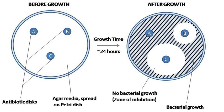Inoculation is made with a broth culture diluted to match a 0.5 McFarland turbidity standard, which is roughly equivalent to 150 million cells per milliliter.